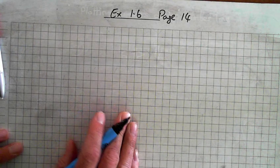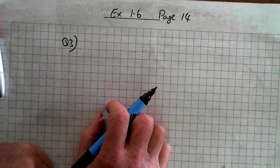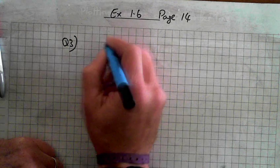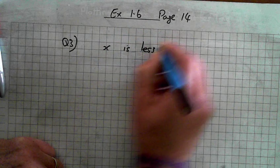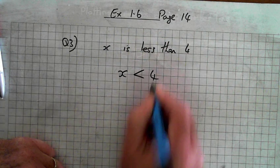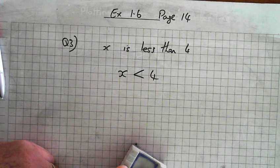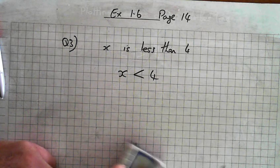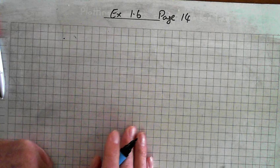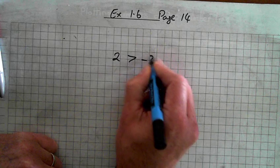Question 3: write a mathematical sentence — a bit like the previous exercise. X is less than 4. And there's one here: 2 is greater than minus 3.